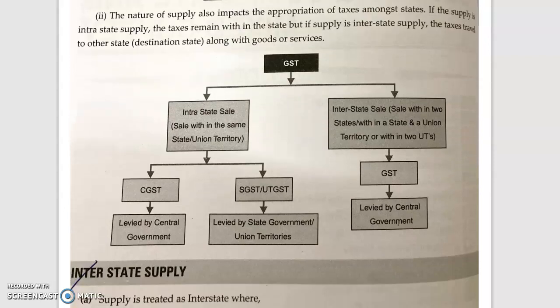GST is categorized into two parts. First is intrastate — intrastate sales means sales within the same state or union territory. Interstate means sales between two different states. In case of intrastate sales, CGST and SGST will be levied. CGST goes to the Central Government, and SGST and UTGST go to the State Government and Union Territories respectively.